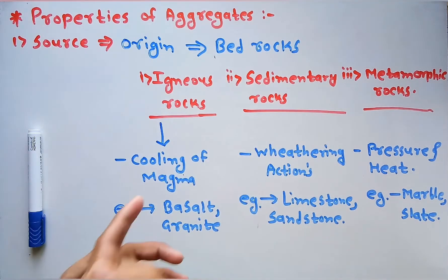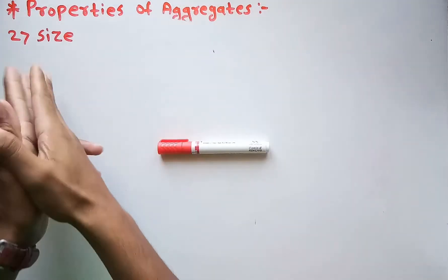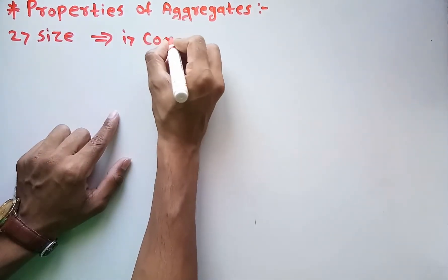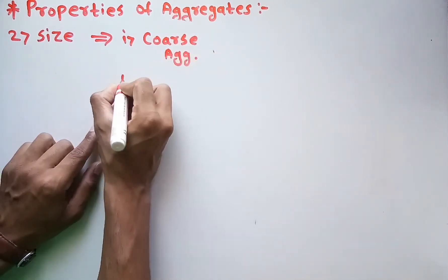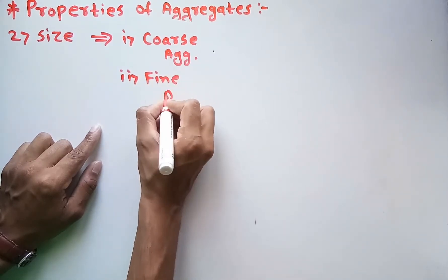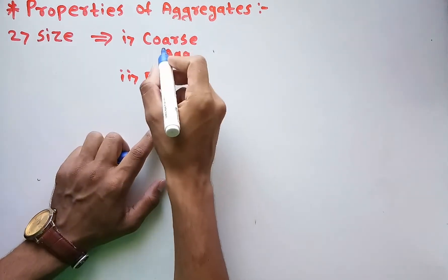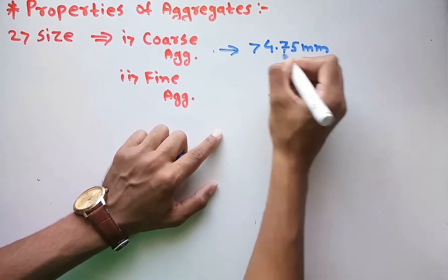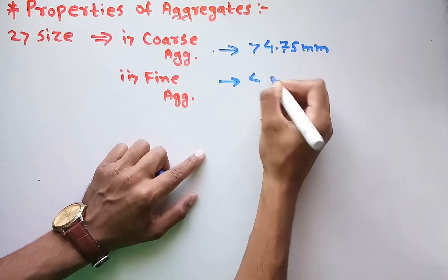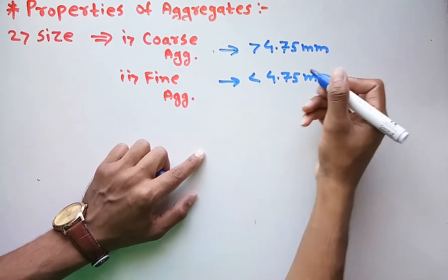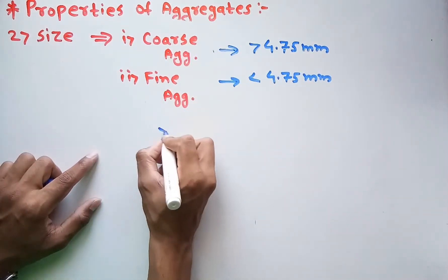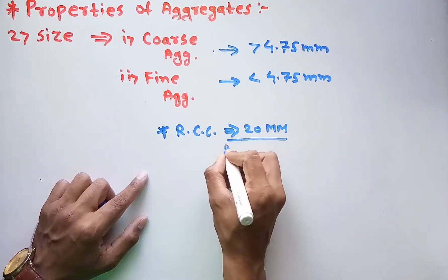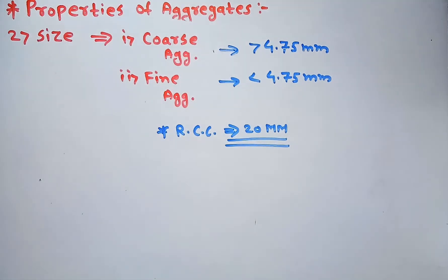The second property of aggregate is size. On the basis of size, aggregates can be classified as coarse aggregates or fine aggregates. When the size of aggregate exceeds 4.75 mm, they are termed coarse aggregates. When the size remains less than 4.75 mm, they are termed fine aggregates. For general RCC works, the minimum size of aggregate used is around 20 mm.